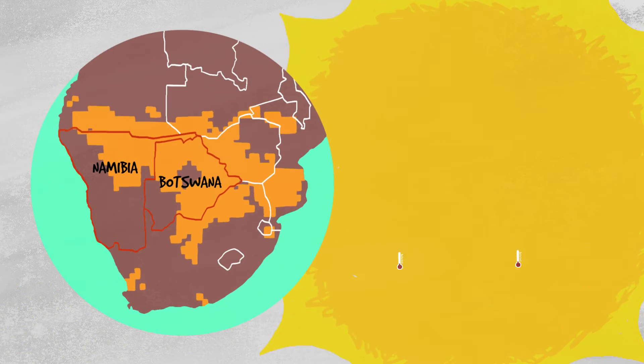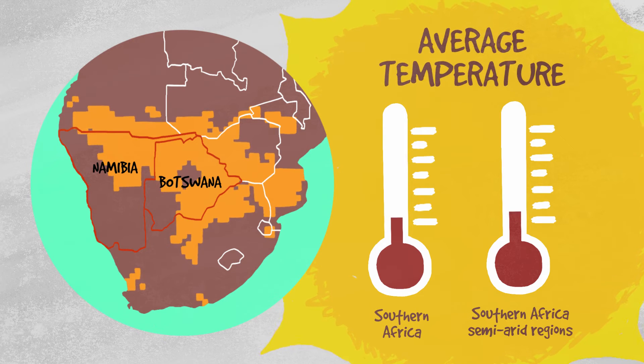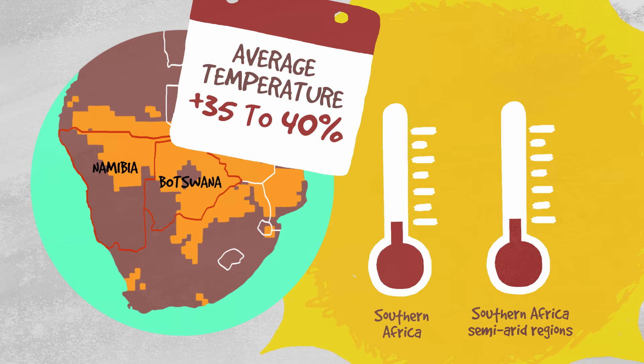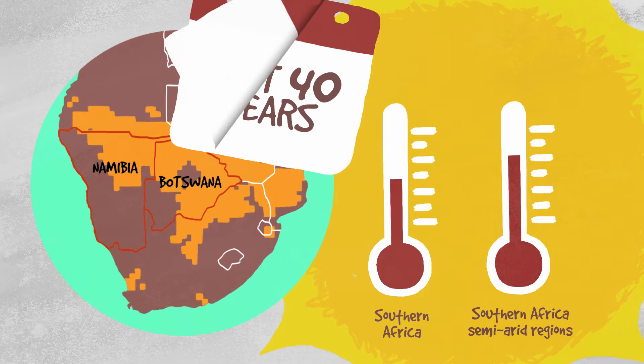Average temperatures here have increased by 30% more than the rest of Southern Africa, confirming these semi-arid regions are climate change hotspots. The average temperatures in these regions are projected to rise by 35 to 40% more than the rest of Southern Africa over the next 40 years, meaning the impacts caused by heat will be felt here first.